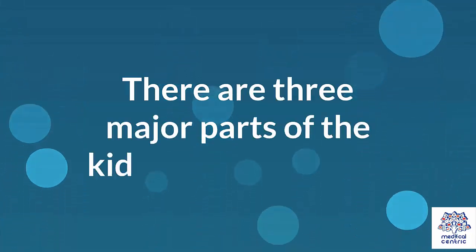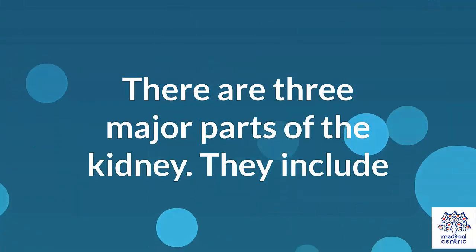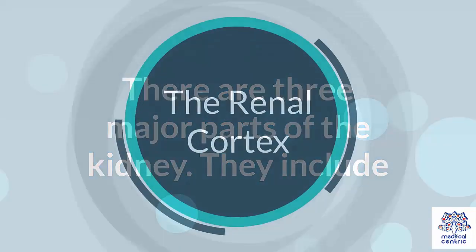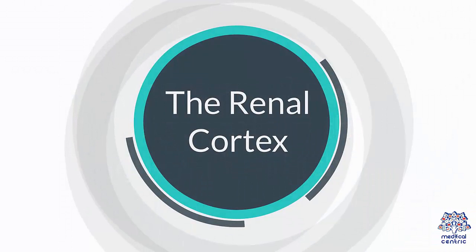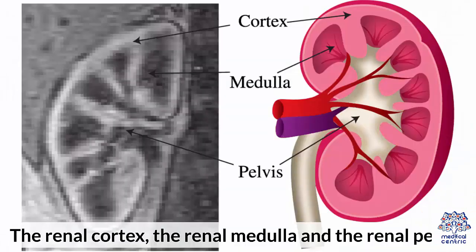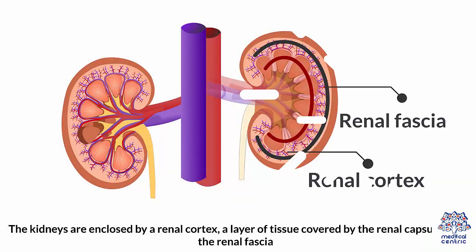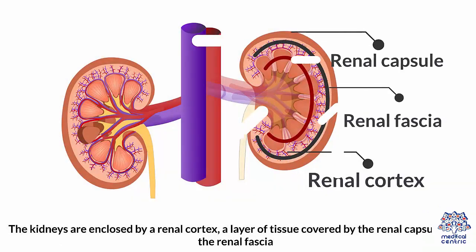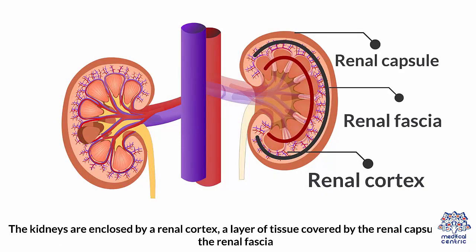Parts. There are three major parts of the kidney: the renal cortex, the renal medulla, and the renal pelvis. The kidneys are enclosed by a renal cortex, a layer of tissue covered by the renal capsule and the renal fascia.